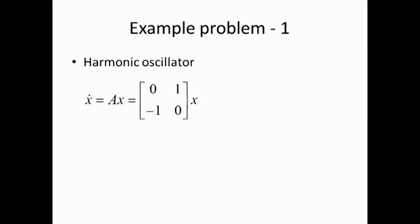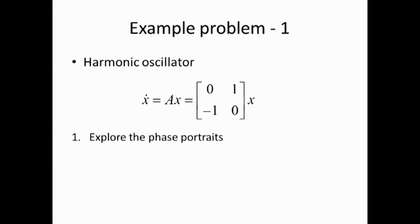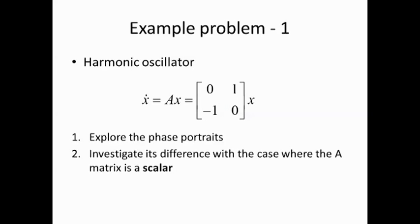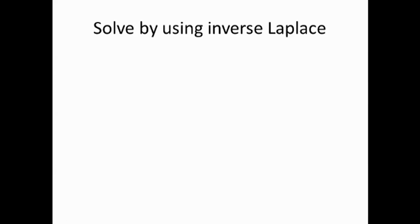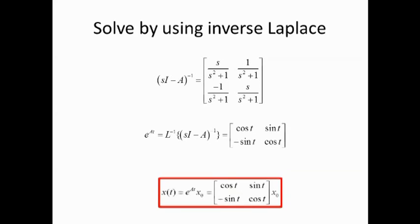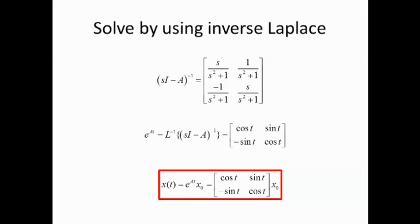We're going to talk about the harmonic oscillator example here, and we're exploring its phase portraits and investigate its difference with a case where the A matrix is a scalar. There are several ways to solve this equation, and in our case, we use the inverse Laplace transform like this, and here is solution. As we can see, the states x1 and x2 oscillate around its initial value, which will be verified in the simulation afterwards.